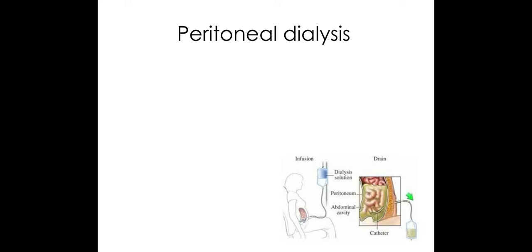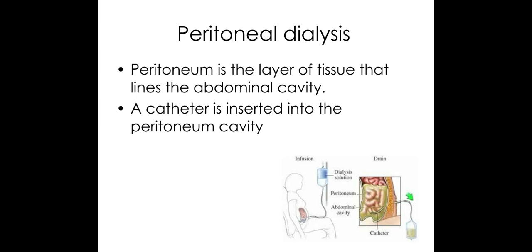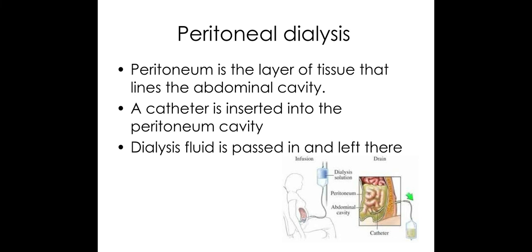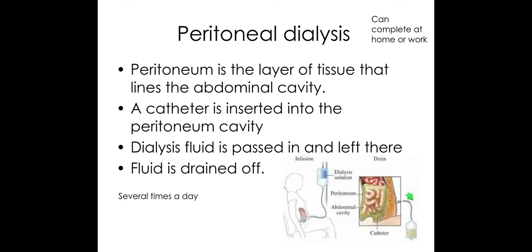The next one is peritoneal dialysis. This uses the natural membrane in our abdominal cavity, as shown in this image. The dialysis solution is pumped into the individual's abdominal cavity and, similar to hemodialysis, there's an exchange of solutes, water, and ions across the membrane with the blood inside the intestines. The advantage is that dialysis fluid can be left in there so you can go about your day-to-day business — you do it several times a day but can continue with home or work.